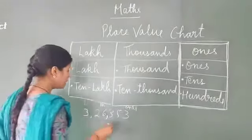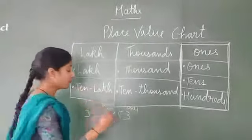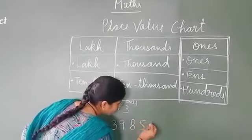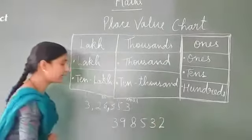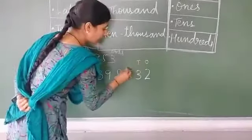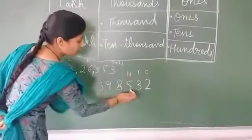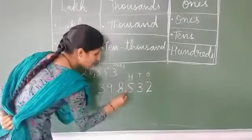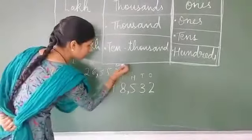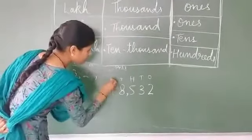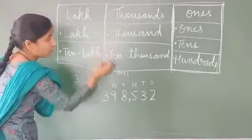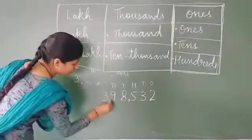While writing a number, suppose that this is your number: 3, 9, 8, 5, 3, 2. Count from the right — ones, tens, hundreds. Family of ones is complete, use a comma. Now thousand, ten thousand — family of thousands is complete, two members. Now divide its family also with another comma.